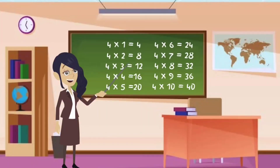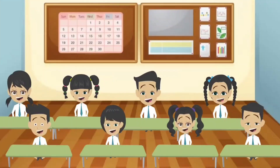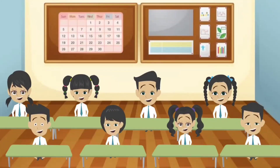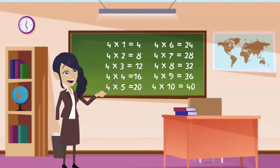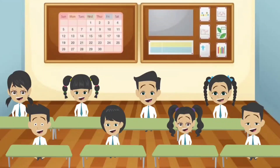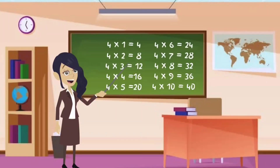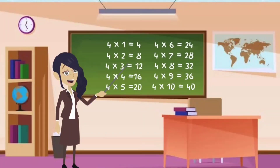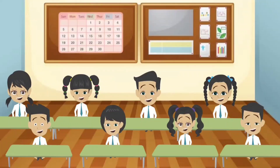Let's do this again together. 4 ones are 4. 4 twos are 8. 4 threes are 12. 4 fours are 16. 4 fives are 20. 4 sixes are 24. 4 sevens are 28. 4 eights are 32. 4 nines are 36. 4 tens are 40.